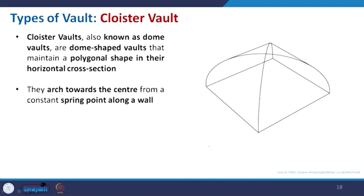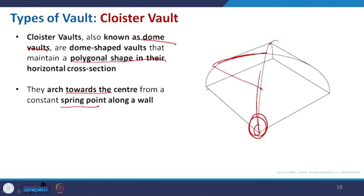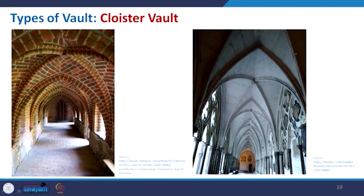The cloister vault, also known as the dome vault, is dome-shaped. Different polygonal shapes can be created: there is one arch and another arch, and how they are connected makes the portion slightly flat and flatter toward the center. The arches run from a spring point along the wall toward the center where they meet each other. You can see in the example how one arch and another diagonal arch create this kind of vault.